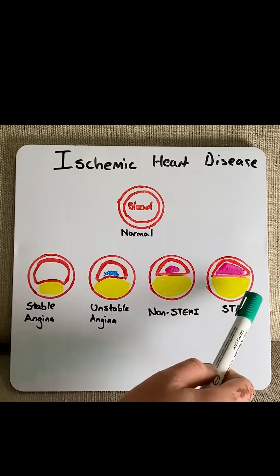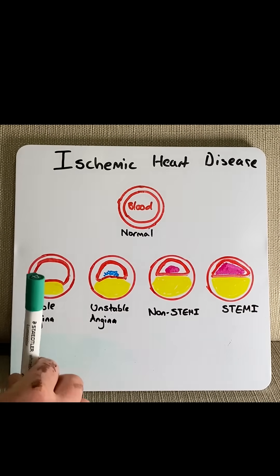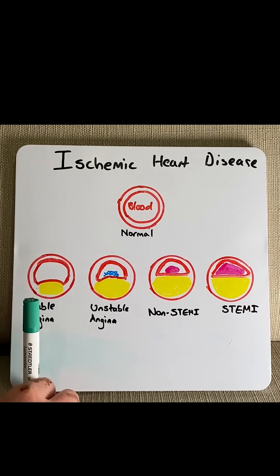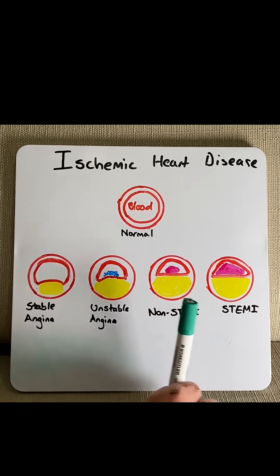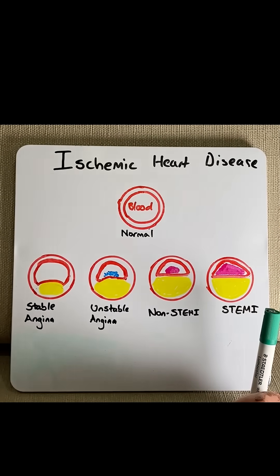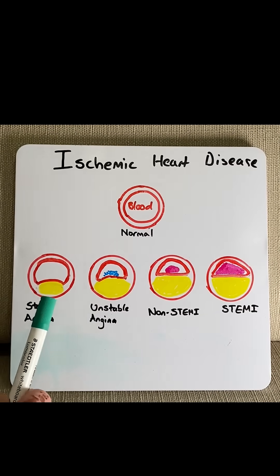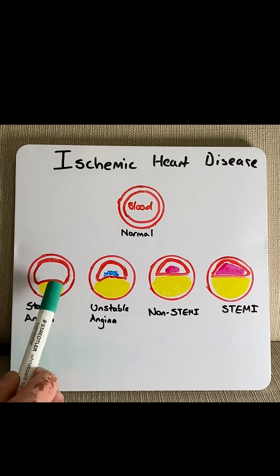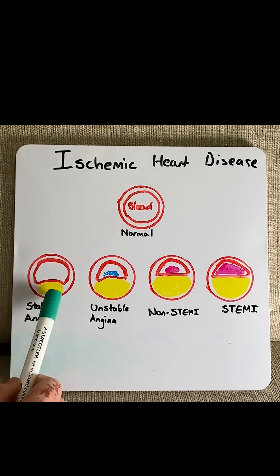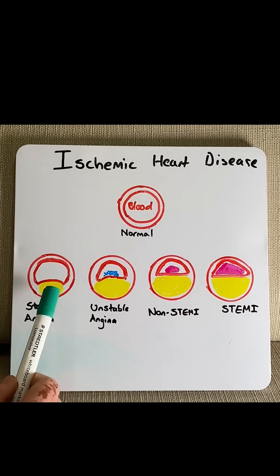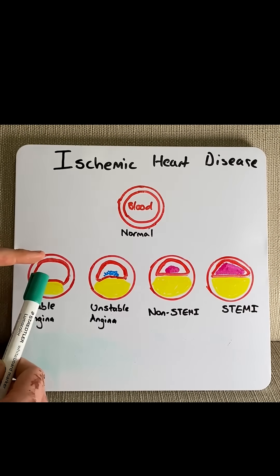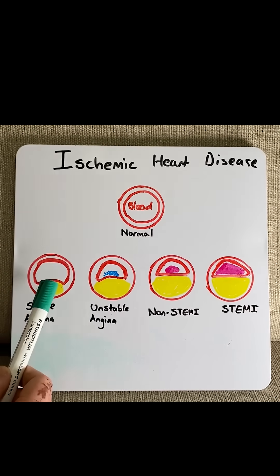Down here we have four forms of ischemic heart disease, starting at the least severe moving to the most severe. Starting with stable angina, this is where we have a fibro-fatty plaque or a sclerotic part that starts to build up in the blood vessel, reducing the lumen of the blood vessel and therefore reducing blood flow.